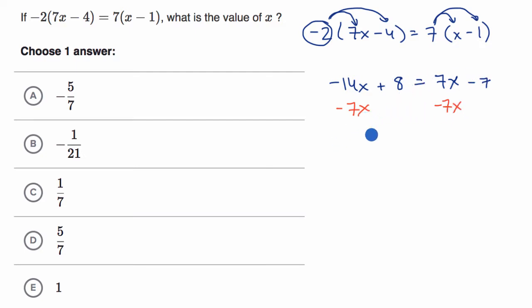And so this is going to get us on our left-hand side, negative 14 x plus negative seven x. Well, that is negative 21 x, negative 21 x plus eight is equal to, these cancel out and then equal to negative seven.